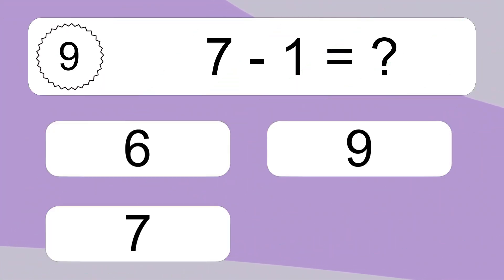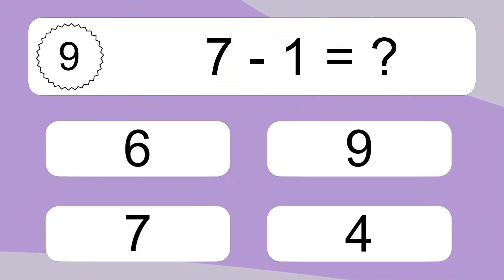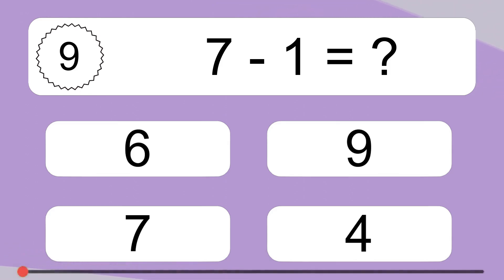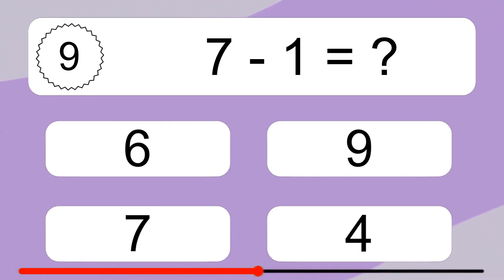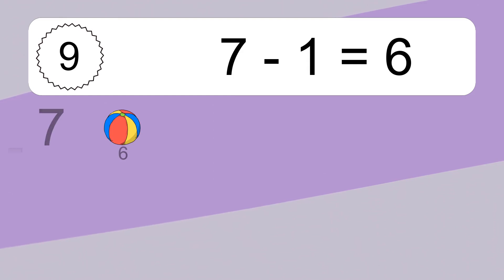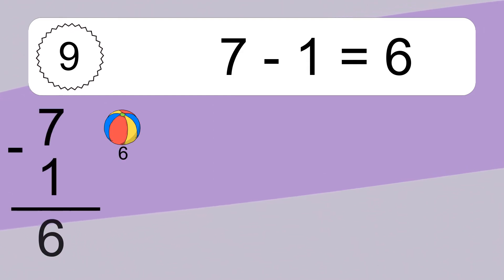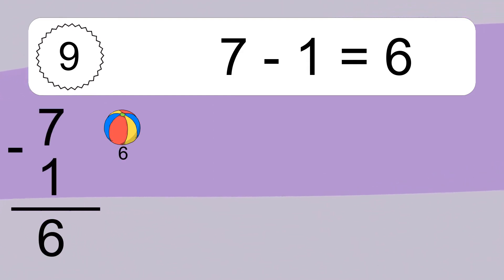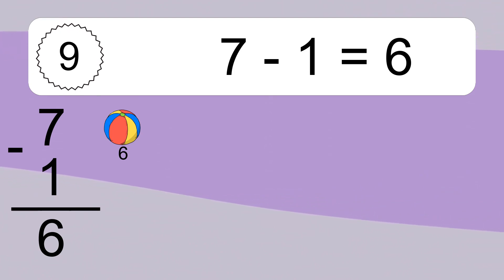7 minus 1 equals what? 7 minus 1 equals 6. Let's count it: 6.